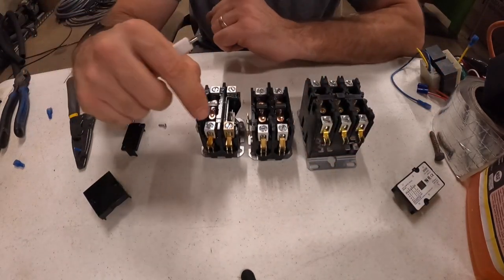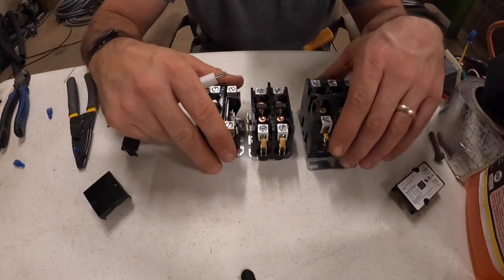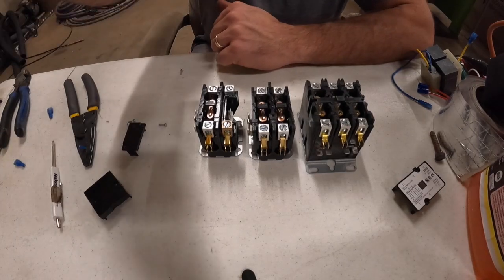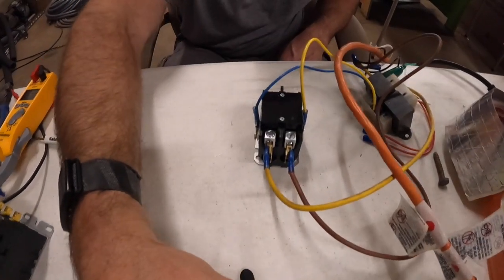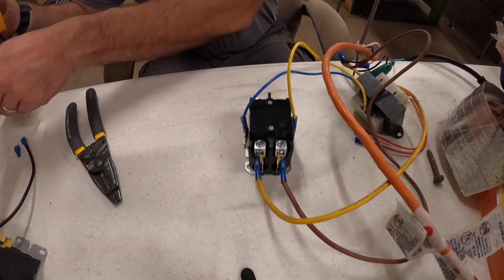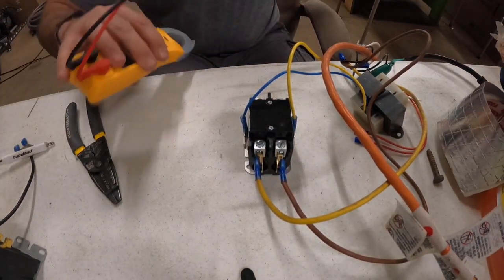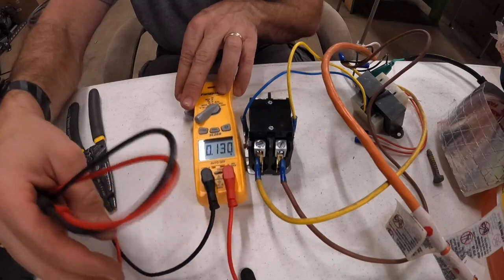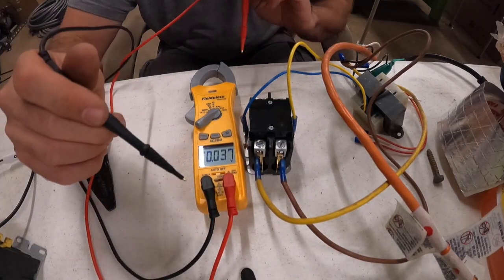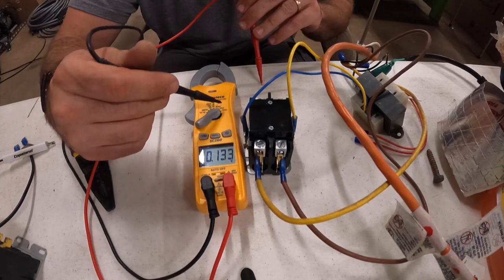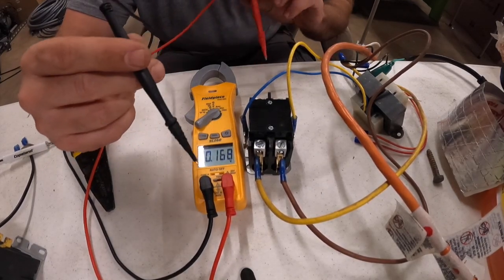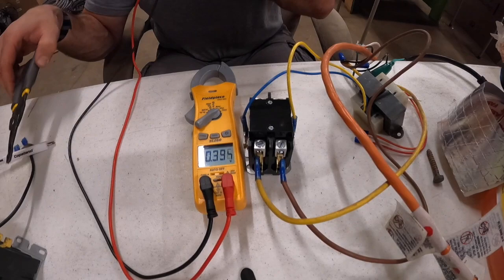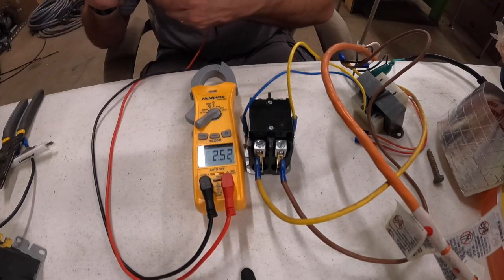I'm going to put these back together, and we're going to apply some voltage to these so I can show you how they work. Alright, so we've got this contactor set up now. If you're out in the field and you want to check the contactor, first off, make sure your voltmeter is set to alternating current for voltage.